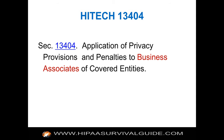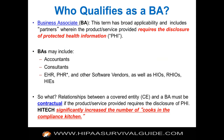Whether or not you're a business associate comes into effect by operation of law. If you're using PHI on behalf of a covered entity to perform a business function for that covered entity, you're a business associate regardless of whether you have a business associate agreement in place. Under the HITECH Act and the omnibus rule, a subcontractor of a business associate can also now be a business associate if that subcontractor uses PHI to perform a business function on behalf of a business associate.